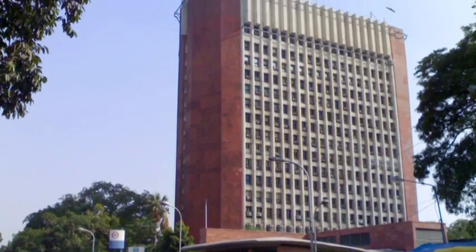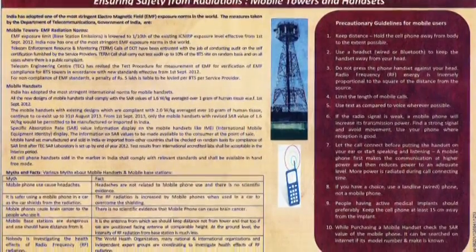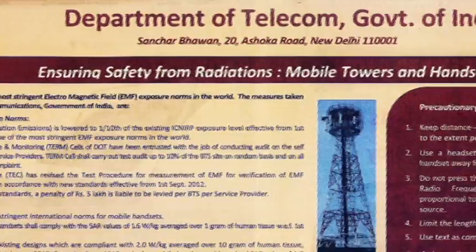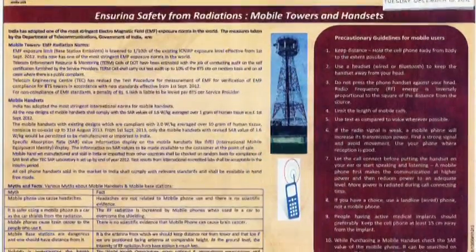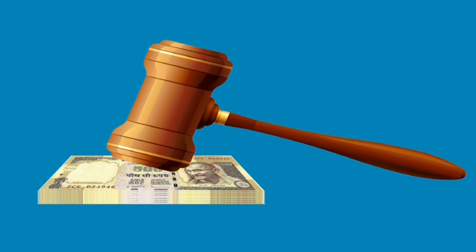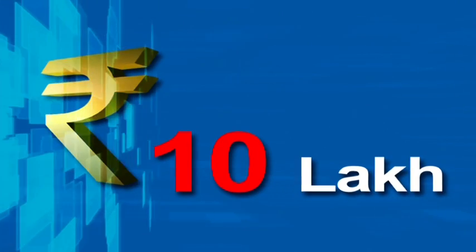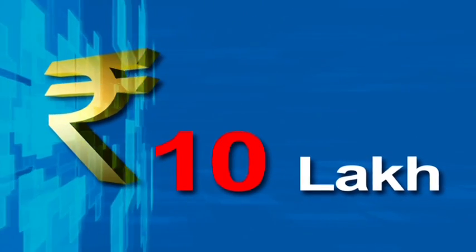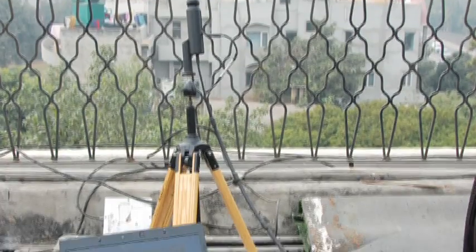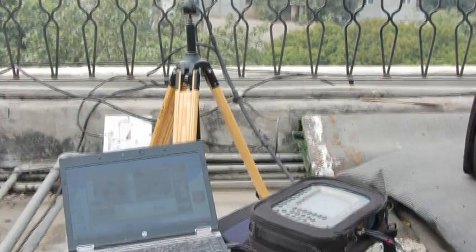The Department of Telecommunications has entrusted its Telecom Enforcement Resource and Monitoring wing — the TERM cells — to audit and ensure compliance. Defaulters are subjected to a heavy penalty as high as Rupees 10 lakhs. India has one of the strictest safety norms in the world.